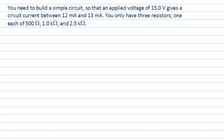This VizCast is concerned with combinations of resistors in a circuit. Now that we've read through the problem, let's begin by interpreting what we're really asked to do. We've been given a voltage and a current, or a range of currents, and we are trying to provide that current by a choice of resistors.